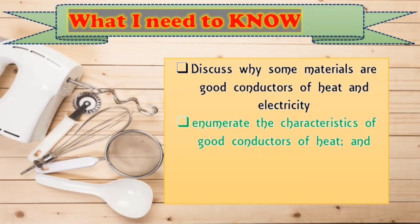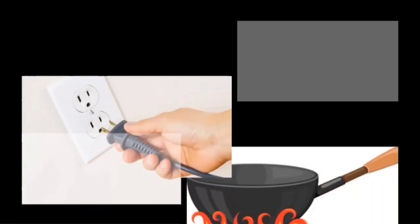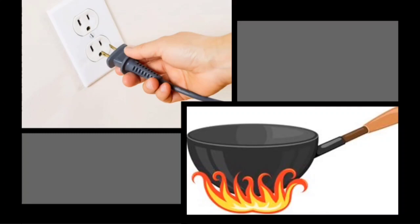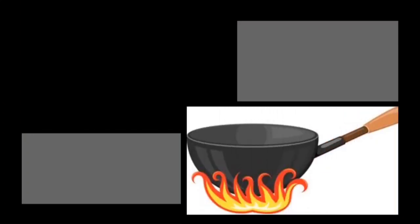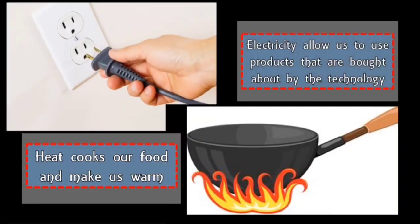You can enumerate the characteristics of good conductors of heat and explain the effects of heat on people and objects. Look at this picture. Can you say something about it? Very good. It produces fire or it produces energy. Based on the picture, it shows the two forms of energy that are very useful in our daily lives. Heat cooks our food and makes us warm, while electricity allows us to use products that are brought about by technology.